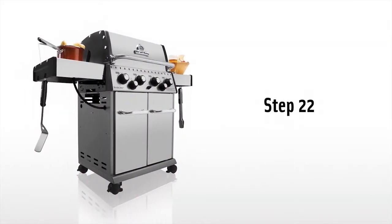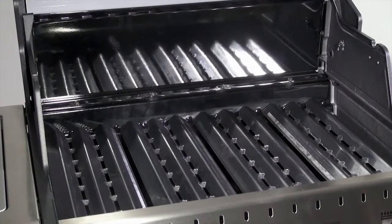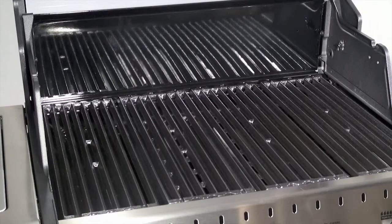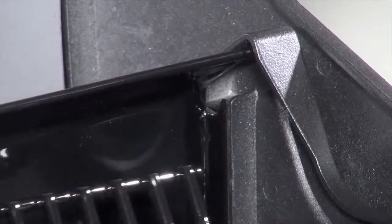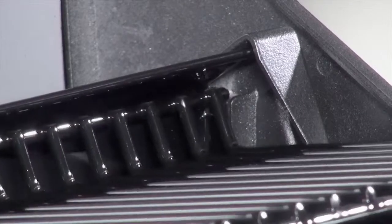Step 22. Install the flavor waves, cooking grids, and warming rack. Note that the warming rack sits in grooves at the rear of the cook box to keep the warming rack in place.